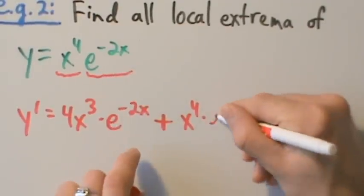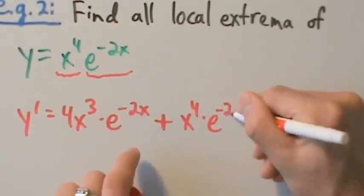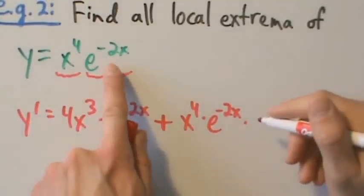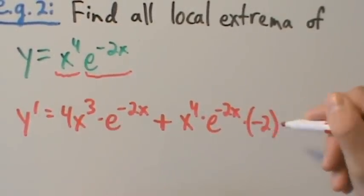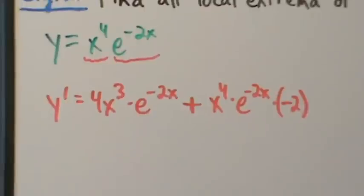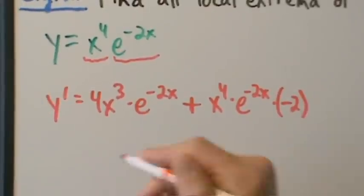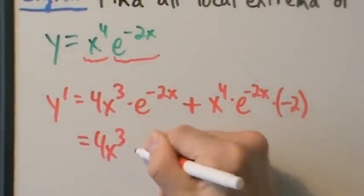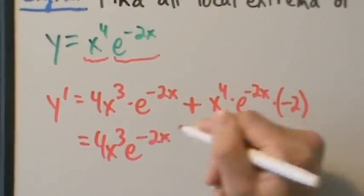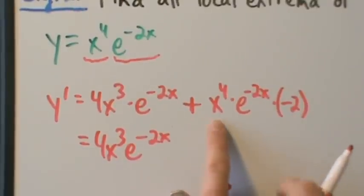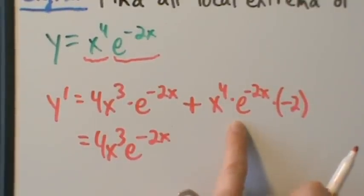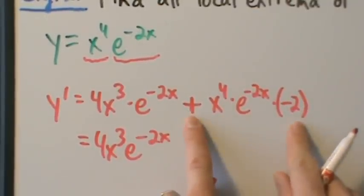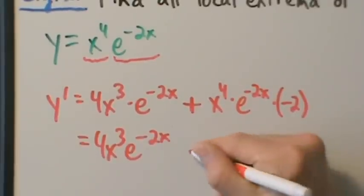...plus the first, x to the fourth, times the derivative of the second. The derivative of e to the negative 2x requires the chain rule: it's e to the negative 2x multiplied by the derivative of negative 2x, which is negative 2. So we have 4x cubed e to the negative 2x minus 2x to the fourth e to the negative 2x.